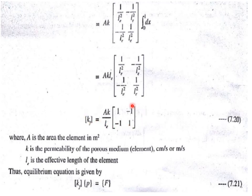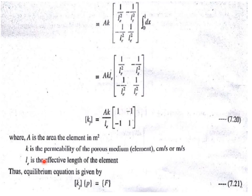Here A is the area of the element in square meters, K is the permeability of the porous medium in meters per second, and Le is the length of the element. Taking all this into consideration, the equilibrium equation for the fluid flow problem is written as Kf · P = F. This is the elemental stiffness matrix and the final governing equation for all fluid flow problems.